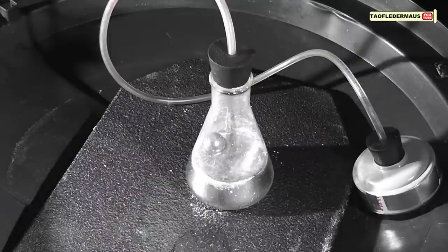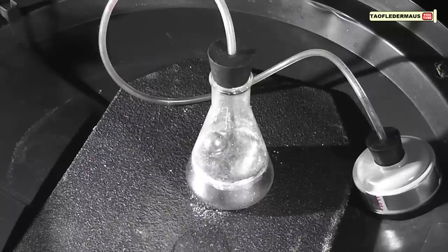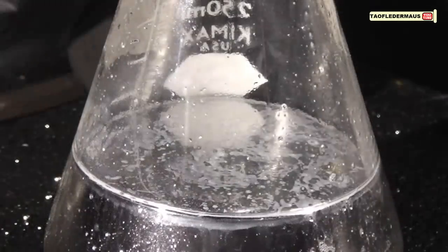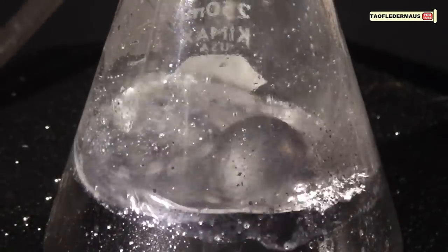Mercury is a very good conductor of heat, and as you can see, the transfer of heat from the ball bearing into the mercury was rather quick. And of course, the density of mercury is so high that the steel ball bearing simply floats on the surface.